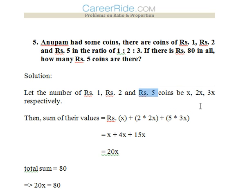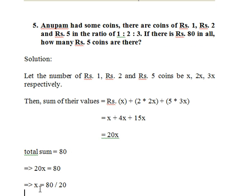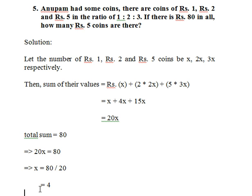So it would be x plus 4x plus 15x, that is 20x. Now we need to find out how much total amount is present with Anupam. It is 80, so 20x would be equated to 80. Now x we will get as 80 by 20 is equal to 4.